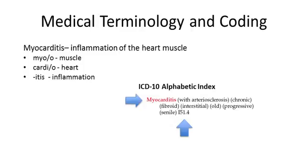The diagnosis myocarditis is broken down into parts to help explain what the condition is. Myo is muscle, cardio means heart, and itis is the suffix that means inflammation. When you put them together, you have a full explanation of the diagnosis as an inflammation of the heart muscle. Now you can find the medical term in the Alphabetic Index of the ICD-10 code book and identify the correct code that will be assigned.